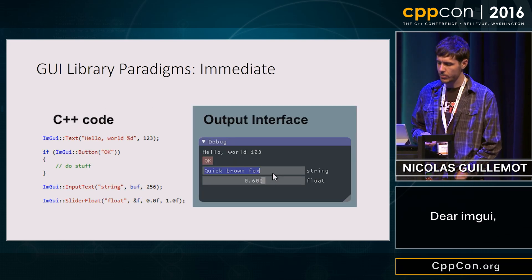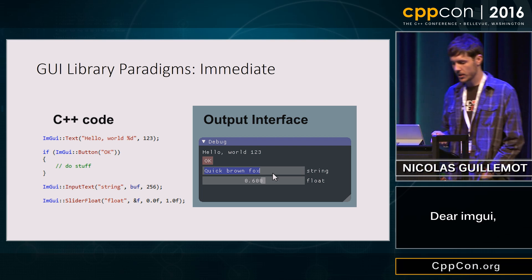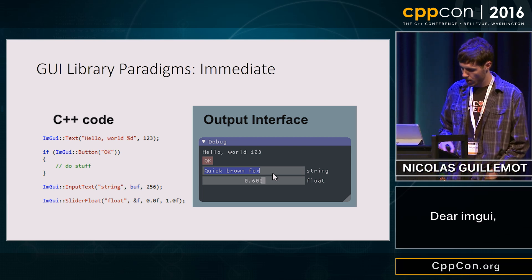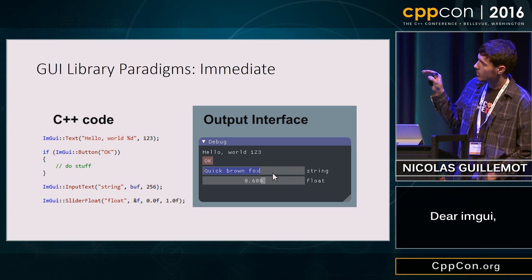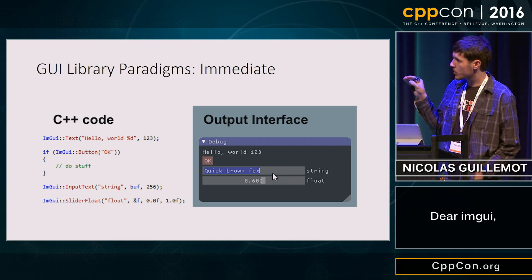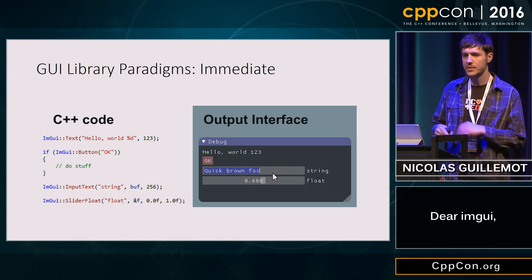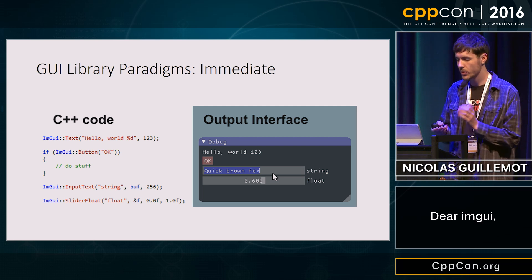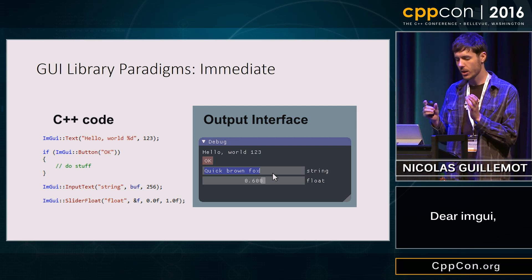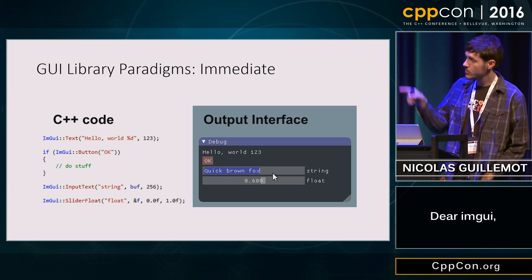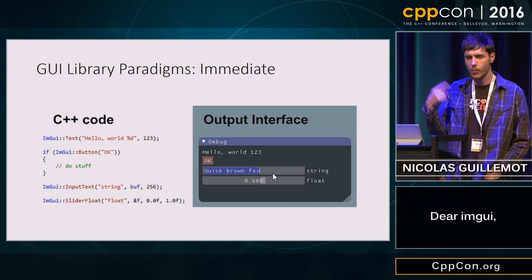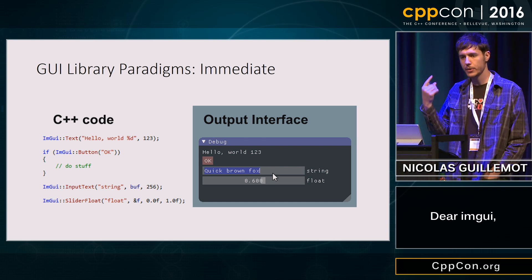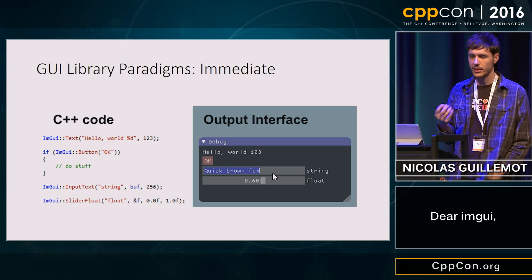The second way to write a GUI library is immediate mode. In this example of immediate mode GUI, the main difference is that each one of those function calls makes the corresponding widget appear. So when you say ImGui text, that makes the text box appear. The idea is that this code on the left is actually run in a loop, over and over again, and at every iteration of your program you regenerate the entire GUI.